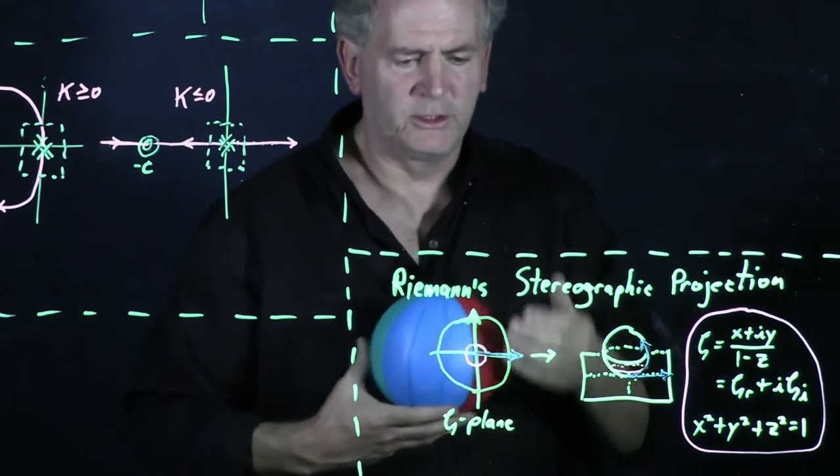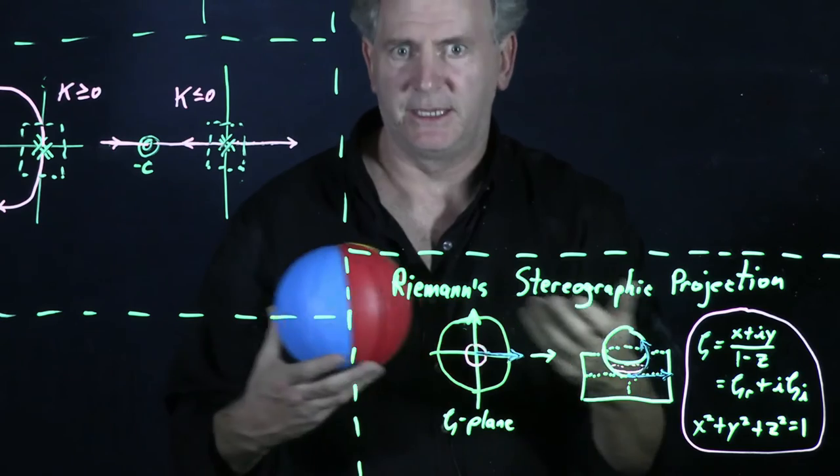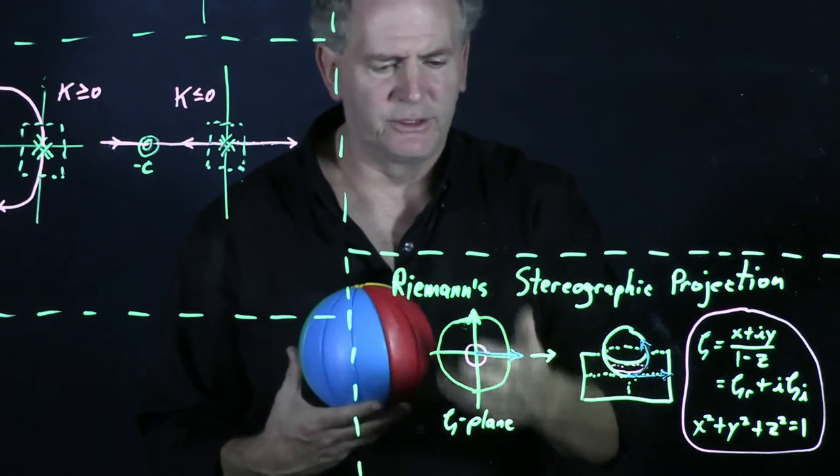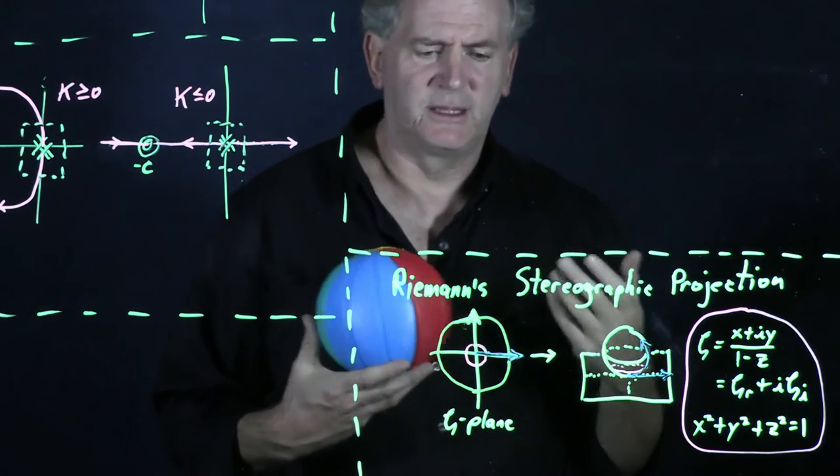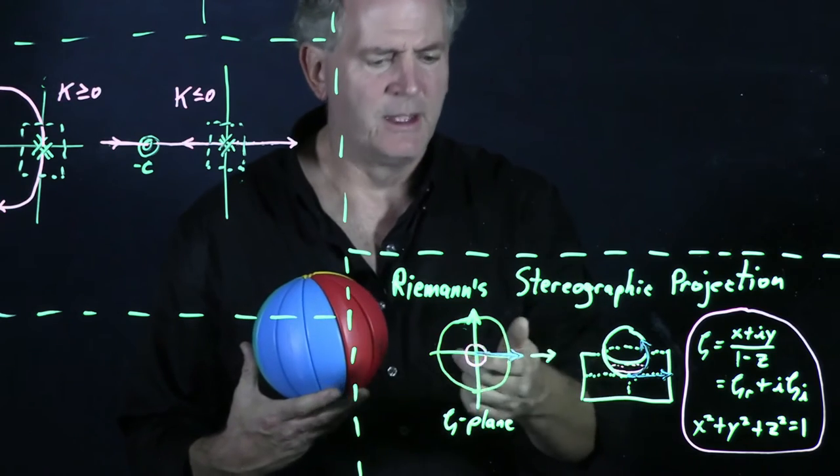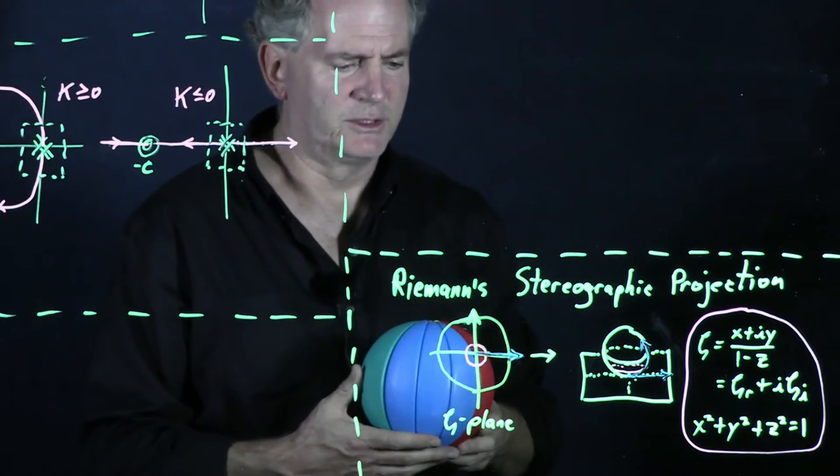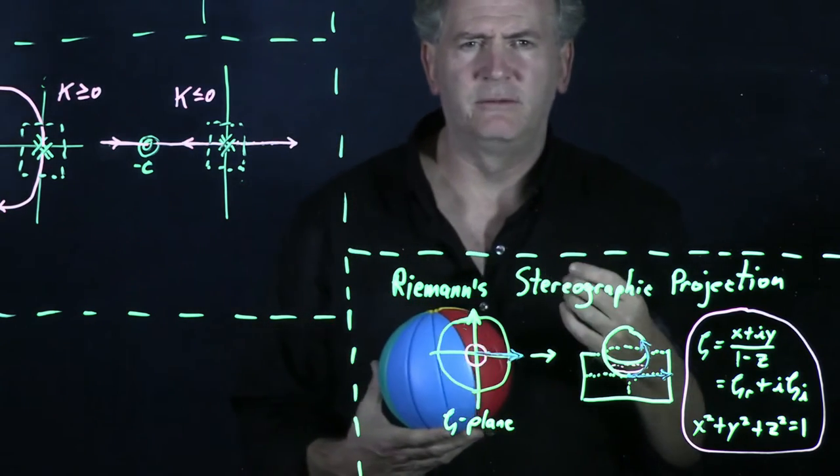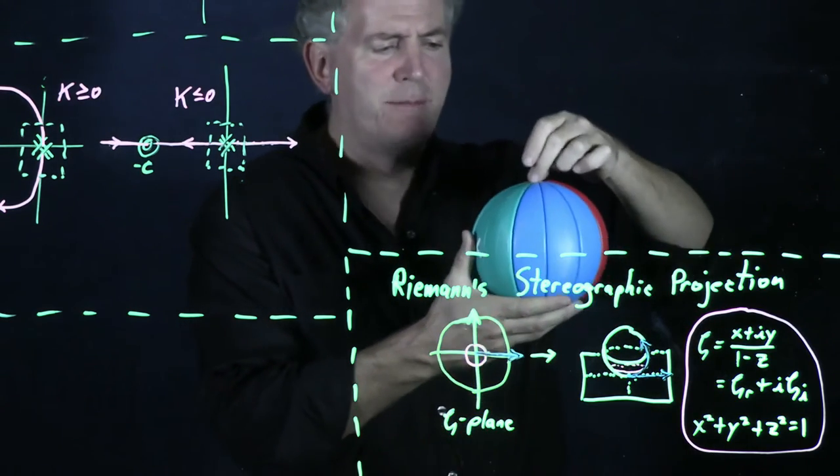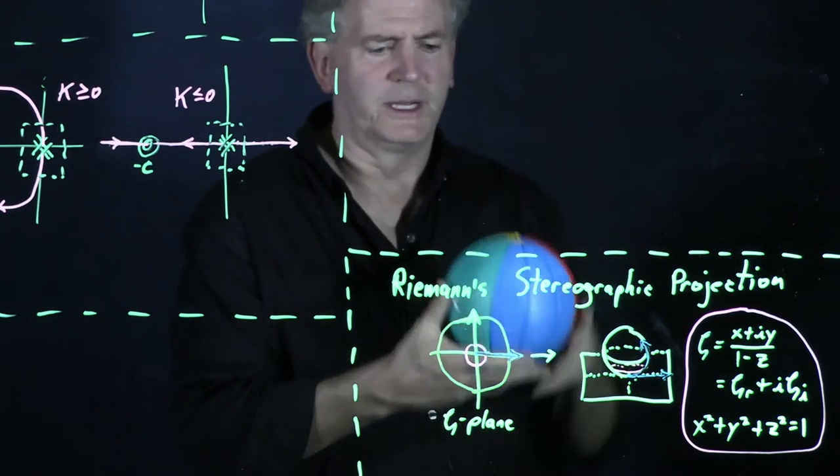And so we refer to the point at infinity in the extended complex plane that includes all of the finite points plus the point that is included in the limit as the distance from the origin goes to infinity. We refer to that point at infinity in the singular because it is the mapping of the north pole point.